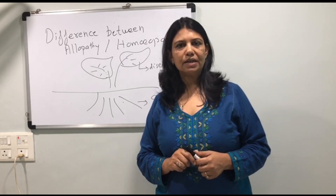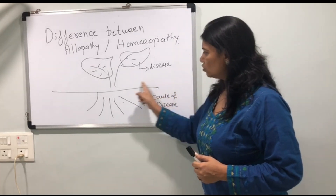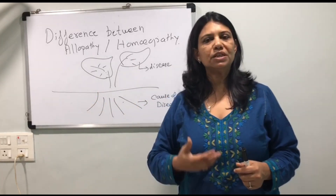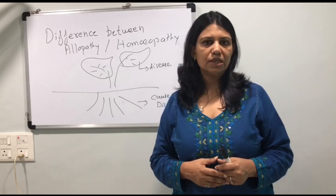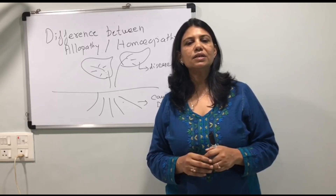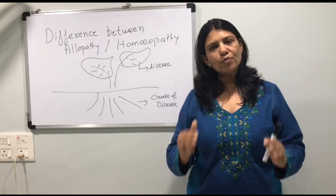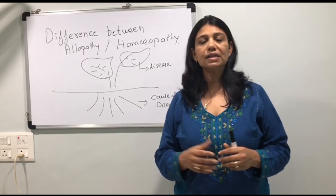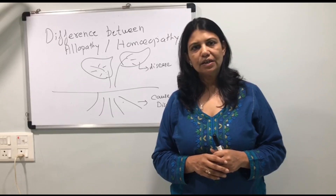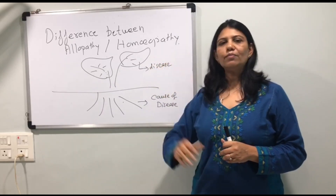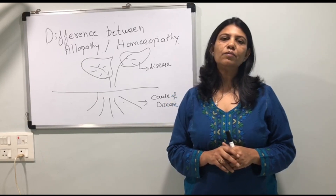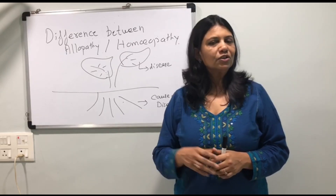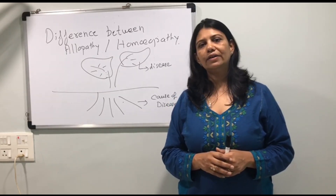But what happens in homeopathic science? A homeopath, first of all, tries to reverse the root. The root is being changed — the soil that produces a disease is changed. So the root is treated first, and once the root is treated, the plant which grows from the root will be nice and in a healthy state. Don't just remove the symptoms of a disease; also restore the soil which produces the disease. This is the difference between allopathy and homeopathic treatment.